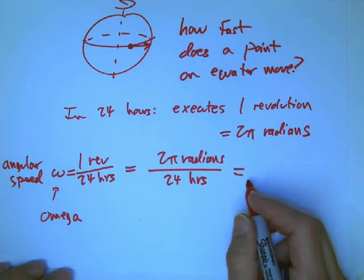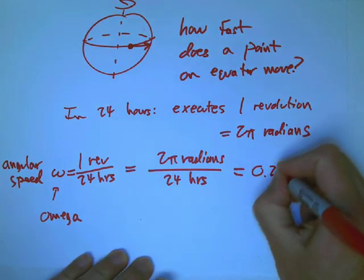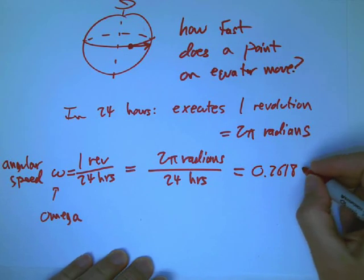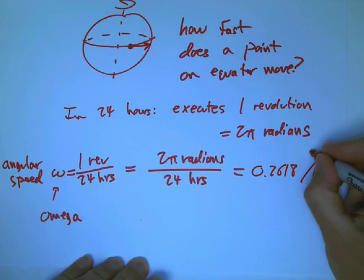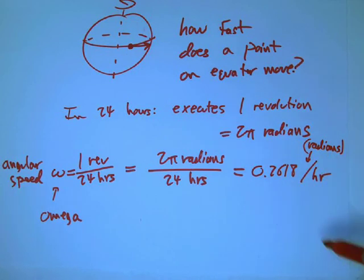So let's get a decimal for that. 2π over 24 is going to be, let me calculate that on my calculator, that's 0.2618. And per, that's per hour.